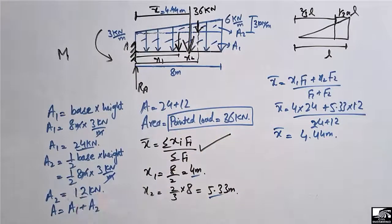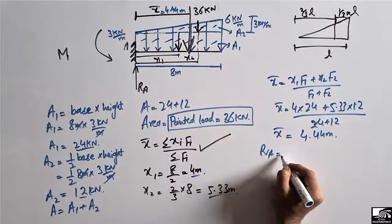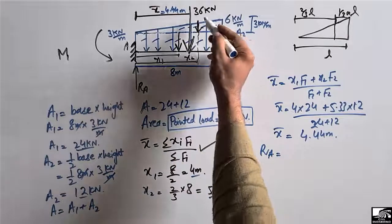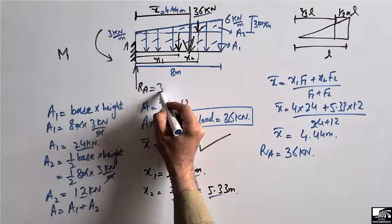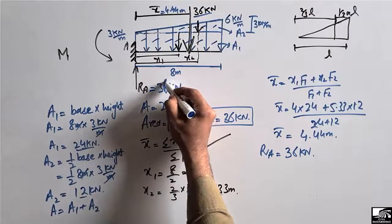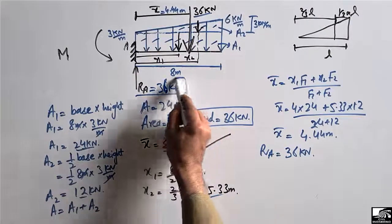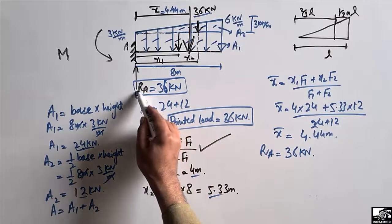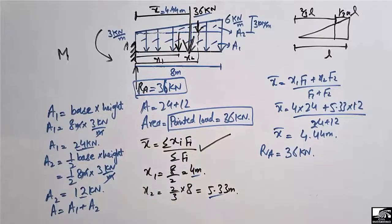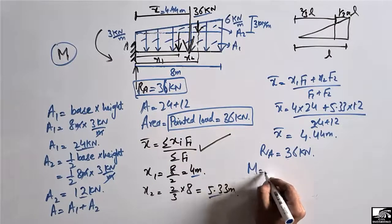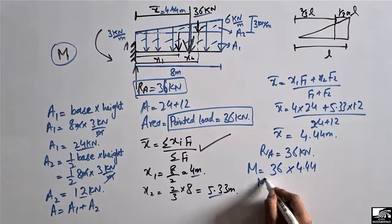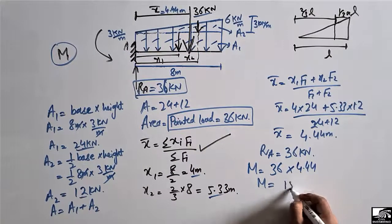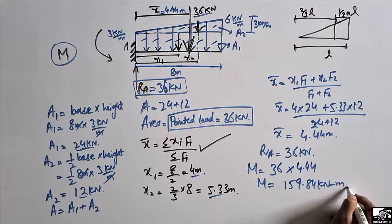Now it is easy to find the moment and support reactions. RA equals the total load acting on the beam, which is 36 kilonewton. Since this is the only support, the whole load is taken here, so RA equals 36 kilonewton. To find the moment, M equals load times moment arm, which is 36 kilonewton times 4.44 meters, giving a moment of 159.84 kilonewton meter.